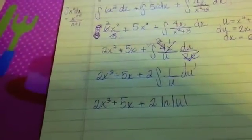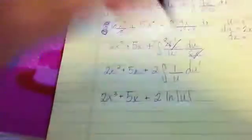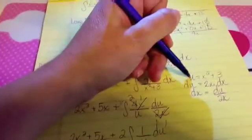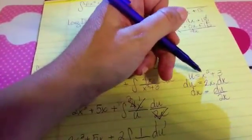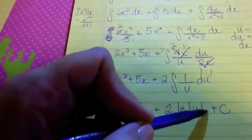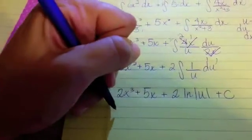the correct domain for the natural log. And then we'll throw in our plus C. And then the last thing that we need to do is just go ahead and back substitute what u was equal to. And as a matter of fact, looking at what u is, u is equal to x squared plus 3, which is always positive, so we actually won't really need the absolute values because x squared plus 3 would never be negative